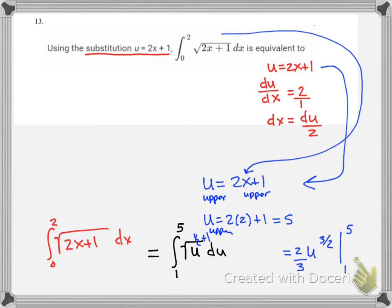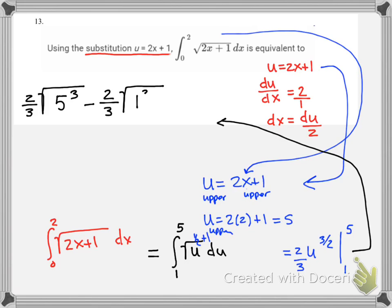We're going to make some room for this work up here. That means I really have 2 thirds of whatever the 3 halves root, or 5 to the 3rd, the square root of that, minus 2 thirds, 1 square root to the 3rd power.